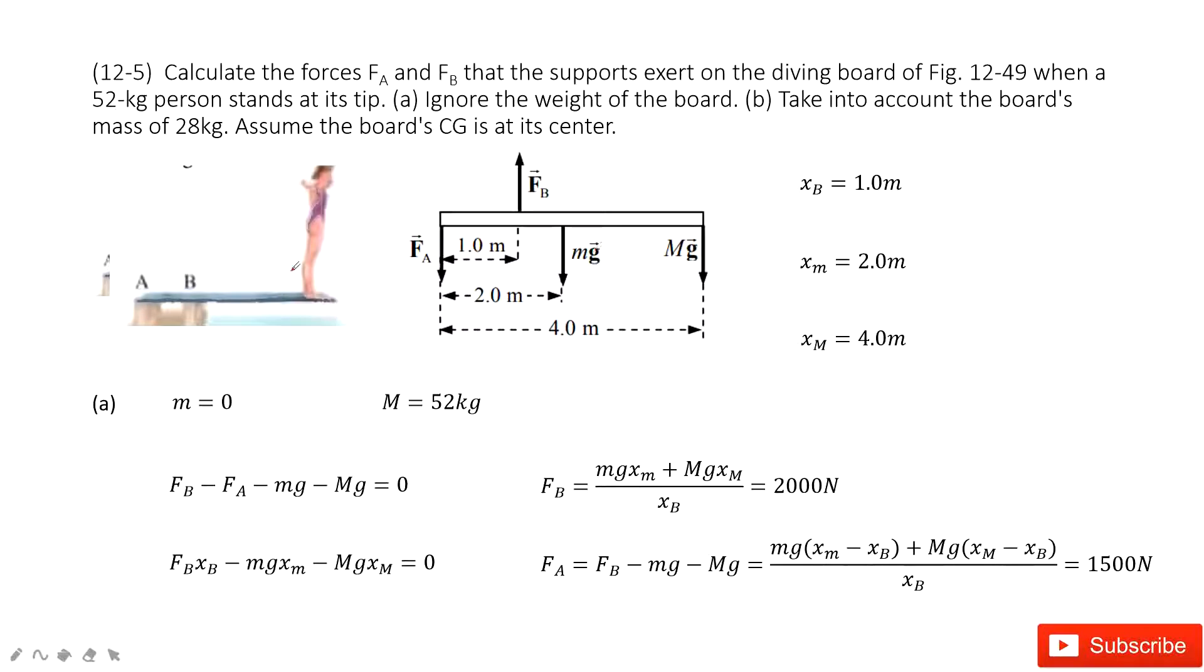Now we look at the system. In this one, the A point is the rotation axis. And then we have four forces: FA, FB, the Mg—this one is the weight for the board—and the capital Mg is there. And then the distance for each one is given.